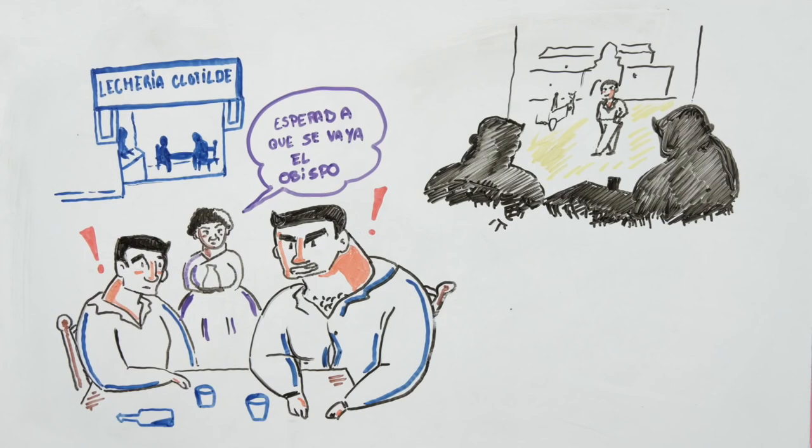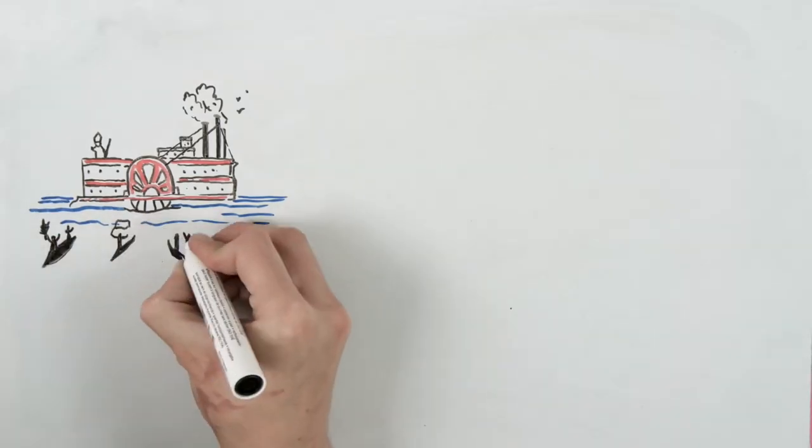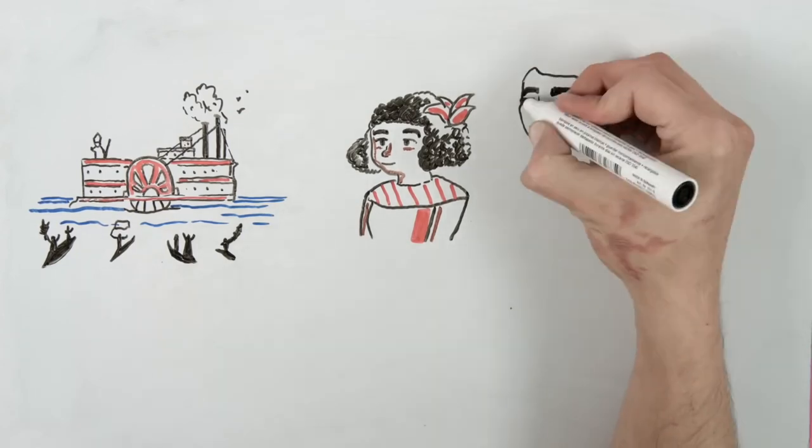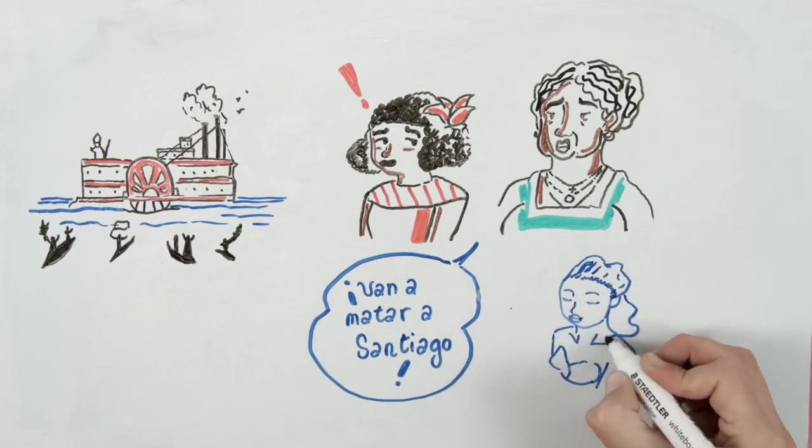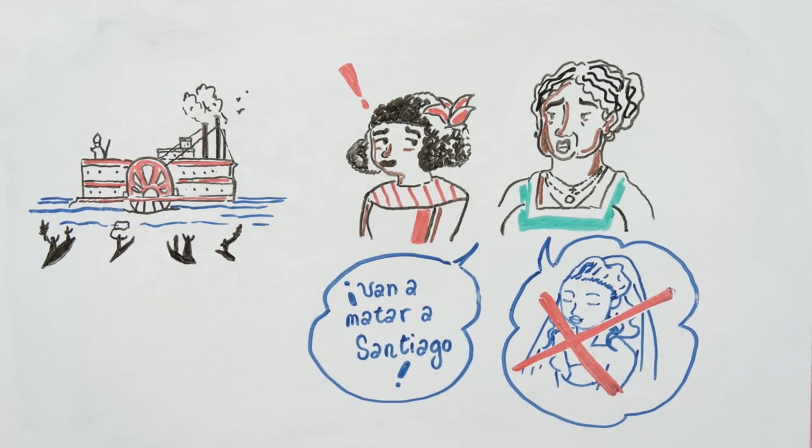Clotilde asked them to wait for the bishop to leave. The bishop passed by. Margot was with Santiago, but after saying goodbye, she found out that the Vicario brothers wanted to kill him because Angela Vicario was not a virgin when she married, because of him.